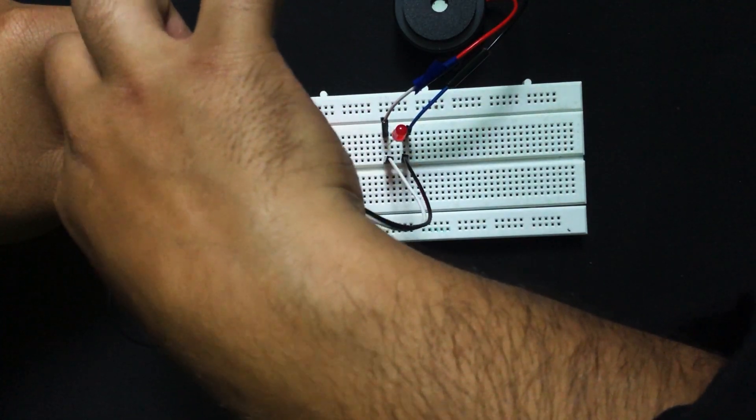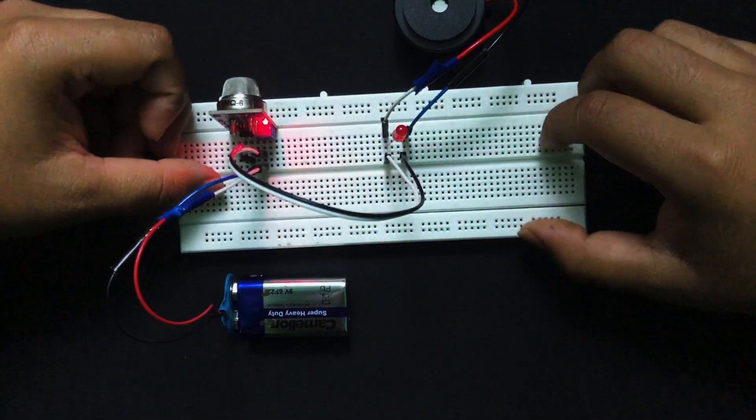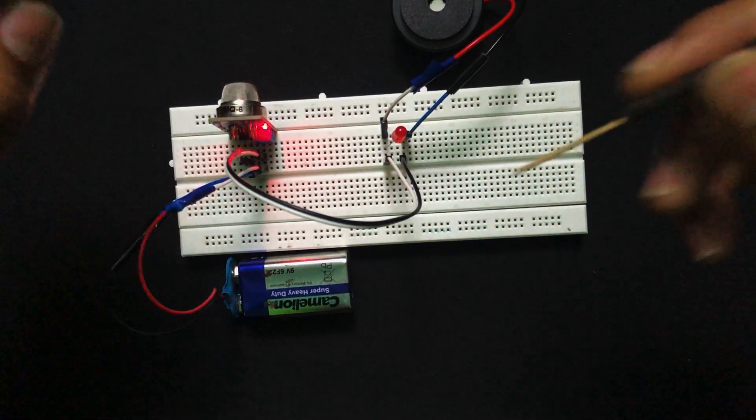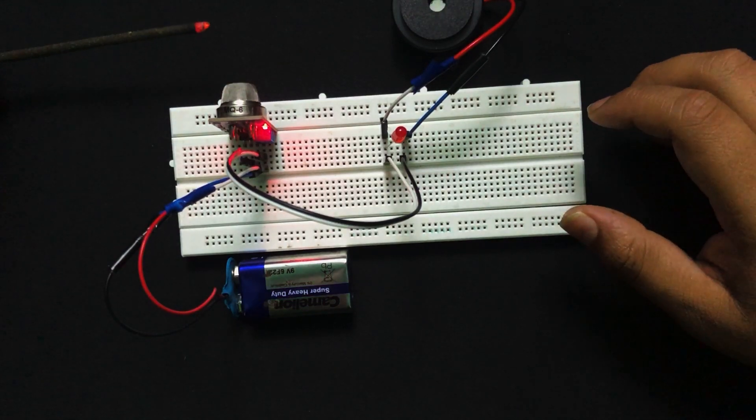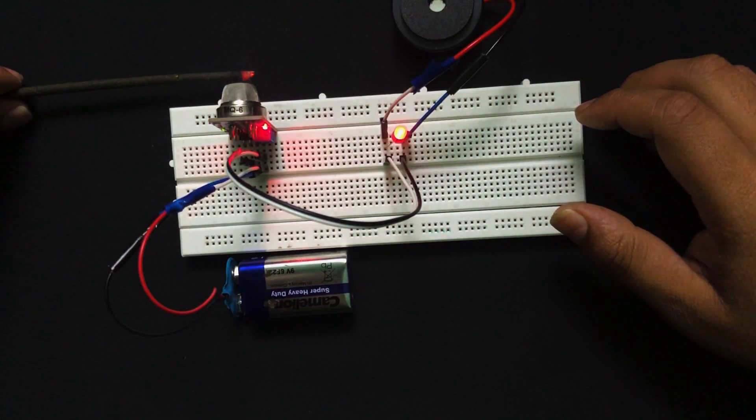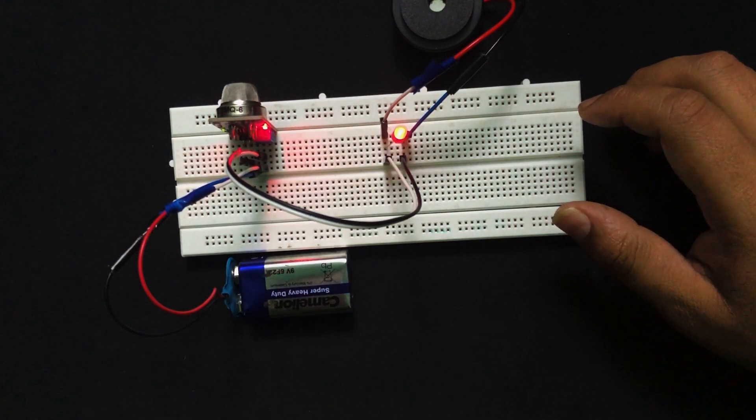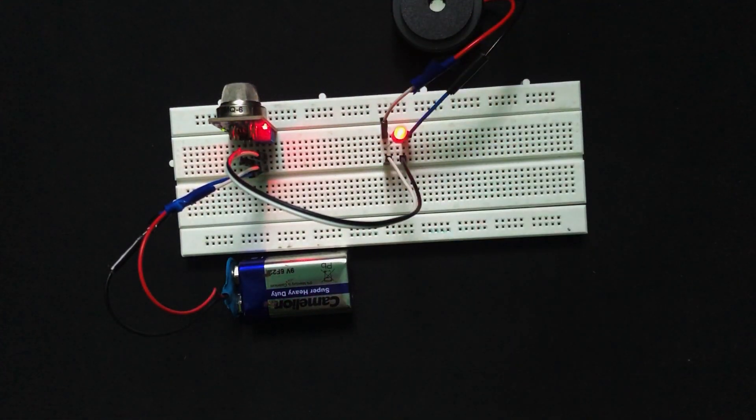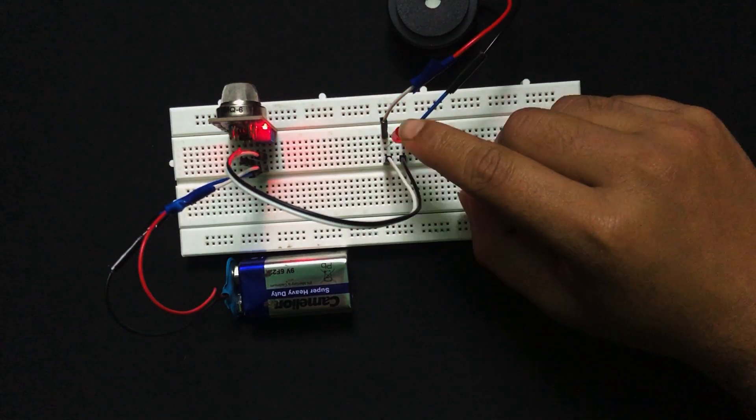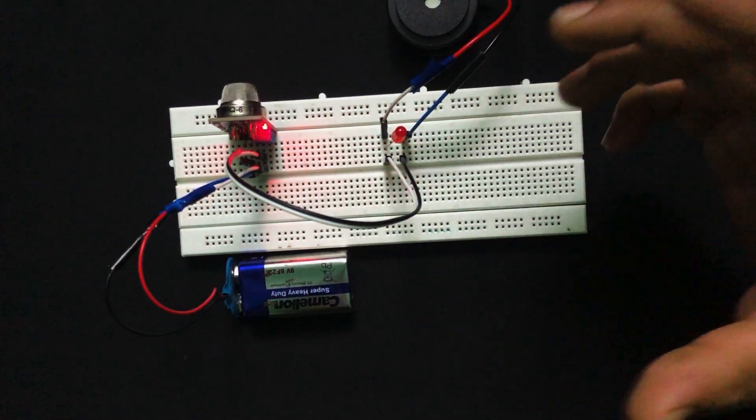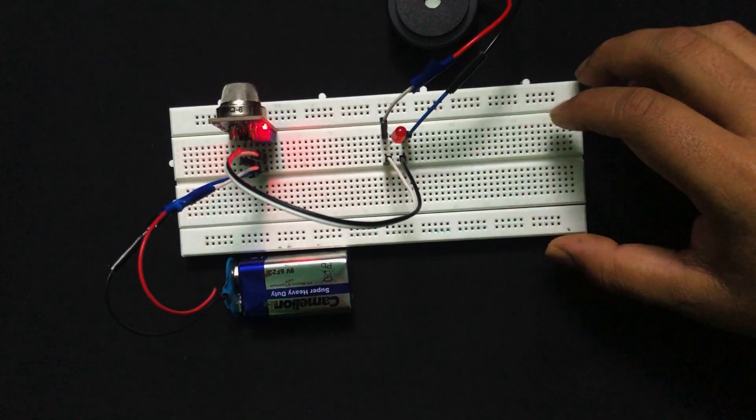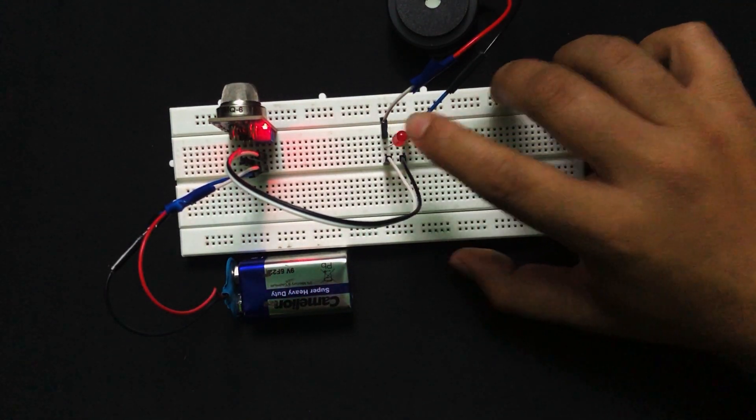Now that we have completed our circuit, let us check whether it is working or not. For that I'll be using an incense stick. As you see, whenever I put the incense stick near the sensor it is beeping, the buzzer is beeping and the LED is glowing. After some time the circuit will stop, the signal from the D0 pin will stop and our LED will stop glowing and the buzzer will stop.